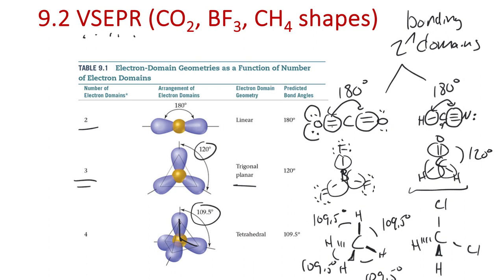We get perfectly 109.5 degrees in tetrahedral geometry. Tetrahedral may seem like it comes from having four atoms attached to carbon, but it's actually more to do with the shape — when you connect the atoms on the outside you get a four-sided pyramid. We'll contrast this later when we see an octahedral shape emerging from an eight-sided pyramid.